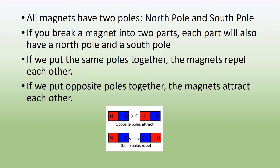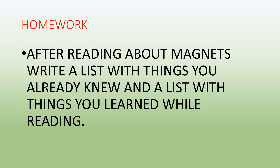North pole and south pole. If you break a magnet into two parts, each part will also have a north pole and a south pole. If we put the same poles together, the magnets repel each other. If we put opposite poles together, the magnets attract each other.